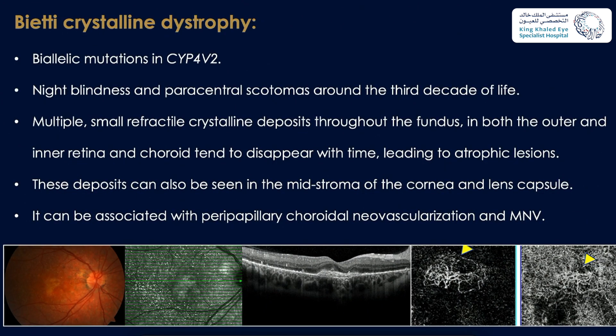Bietti crystalline dystrophy is caused by allelic mutations in CYP4V2. Patients usually have nyctalopia and paracentral scotoma around the third decade of life. Clinically they have multiple small refractile crystalline deposits throughout the fundus in both outer and inner retina and choroid, which tend to disappear with time leading to atrophic lesions. This disorder can also be seen in the cornea and lens capsule and can be associated with peripapillary neovascularization and macular neovascularization.